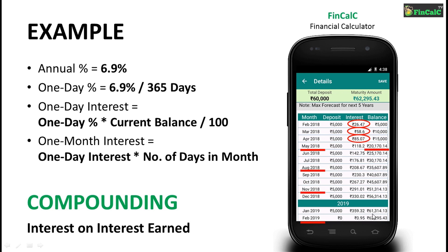So that's how interest is calculated on recurring deposits, with compounding occurring every 3 months after the start. Download our free Android app Finkelsey, which is a financial calculator app that will help you calculate the interest on recurring deposits and many other savings schemes. That's it for this video — subscribe to this channel, like and share this video. Stay tuned.